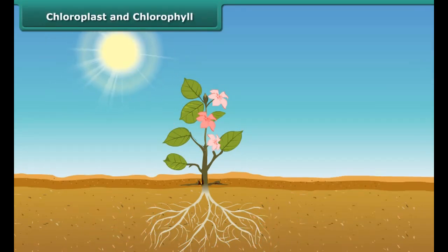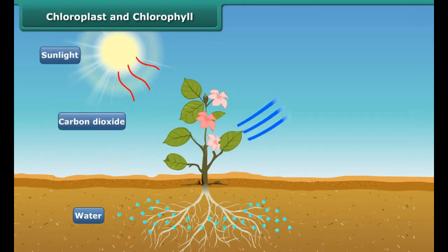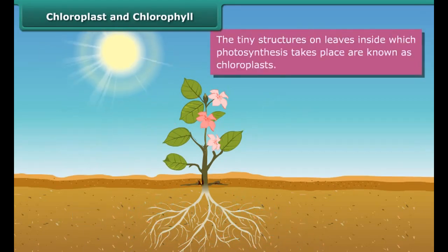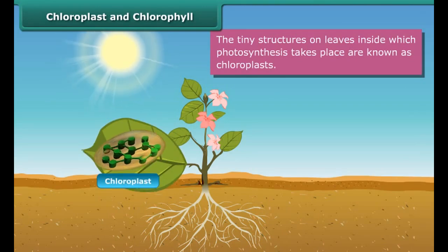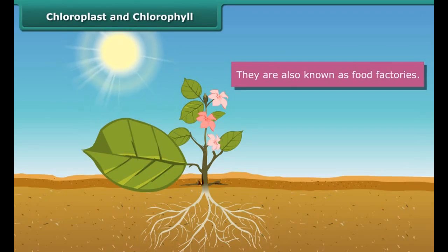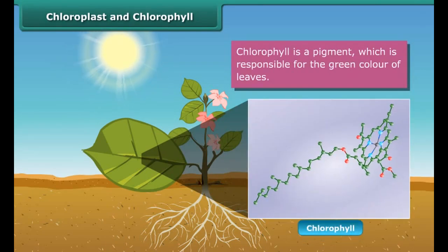Leaves make their food with the help of photosynthesis. The tiny structures on a leaf inside which photosynthesis takes place are known as chloroplasts. Due to their role in food production, they are also known as food factories. Chloroplasts are green in color. They get their color from a pigment called chlorophyll. Chlorophyll helps leaves prepare food.